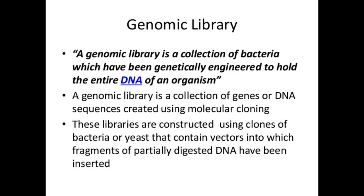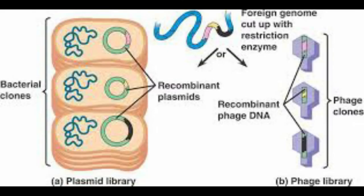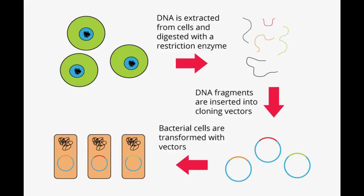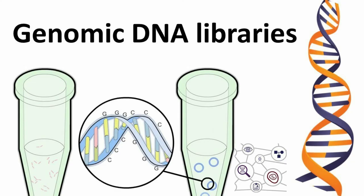After the probe hybridizes to the gene of interest, the gene can be isolated from the fragment. This particular fragment can be cloned further or even analyzed for its particular DNA sequence. PCR — the polymerase chain reaction — was developed by Kary Mullis in 1983. Earlier methods of obtaining multiple copies of a specific sequence of DNA were time-consuming and expensive. In contrast, PCR can create millions of copies of a single gene or any specific piece of DNA quickly in a test tube.